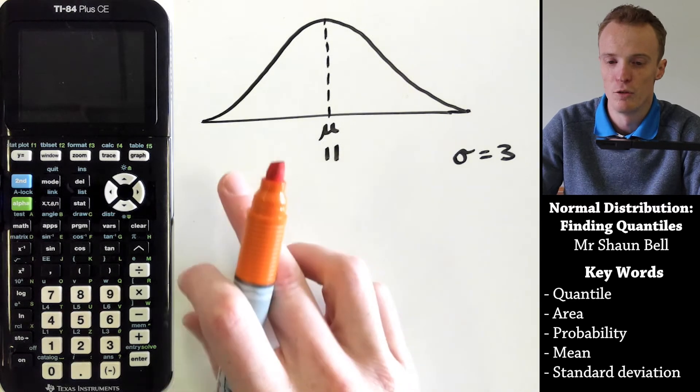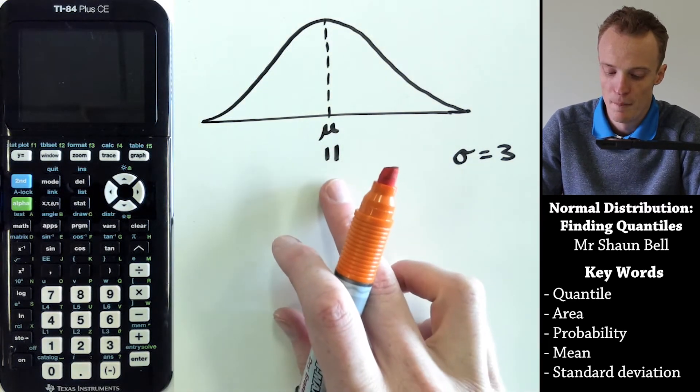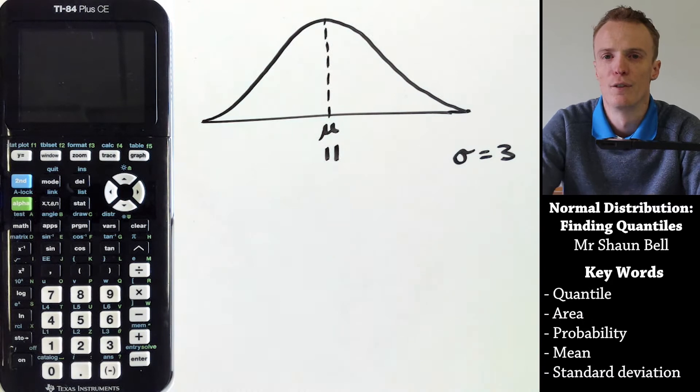What I've got in front of me is a normal distribution graph with a mean of 11 and a standard deviation of 3.